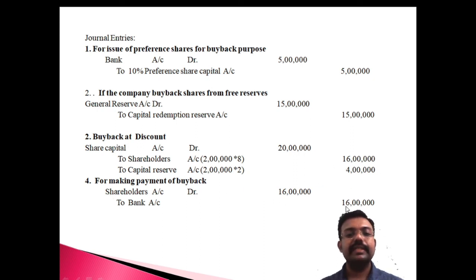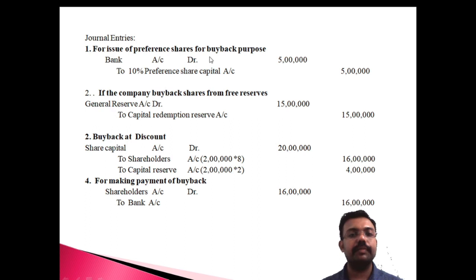These are the entries regarding the buyback. The first two entries relate to the issue of preference shares and utilization of general reserve. The buyback is at a discount, and the discount is recorded in capital reserve. The last entry is for making the buyback payment.